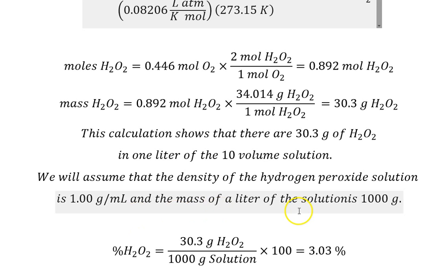So the mass of a liter of solution is 1,000 grams. And so the mass percent would be 30.3 grams of hydrogen peroxide in 1,000 grams of the solution. So it's 3.03%. And by the way, household hydrogen peroxide is 3%. So it is 10 volume hydrogen peroxide.